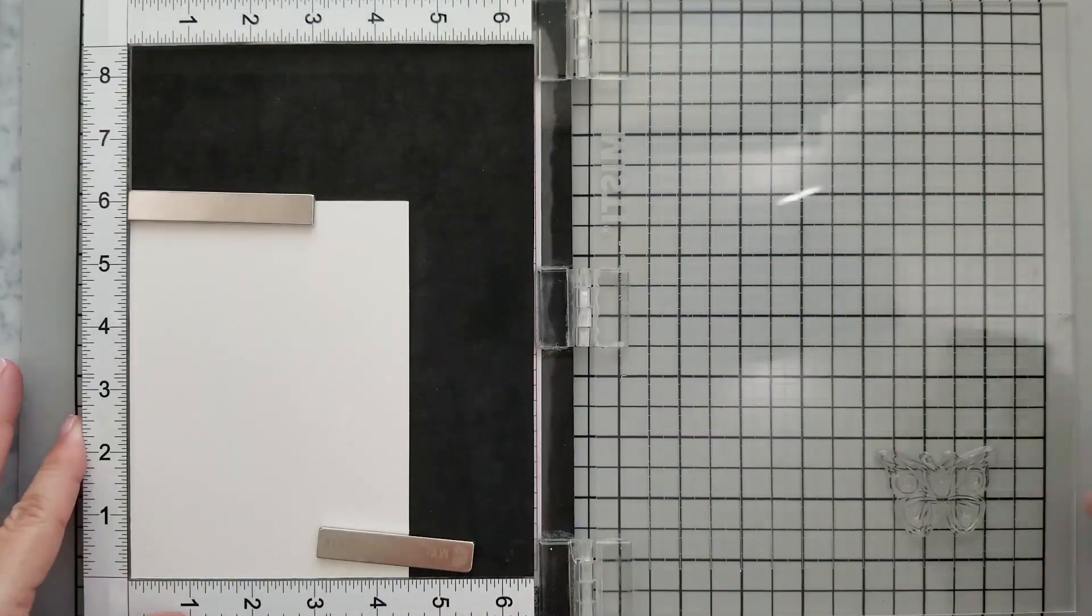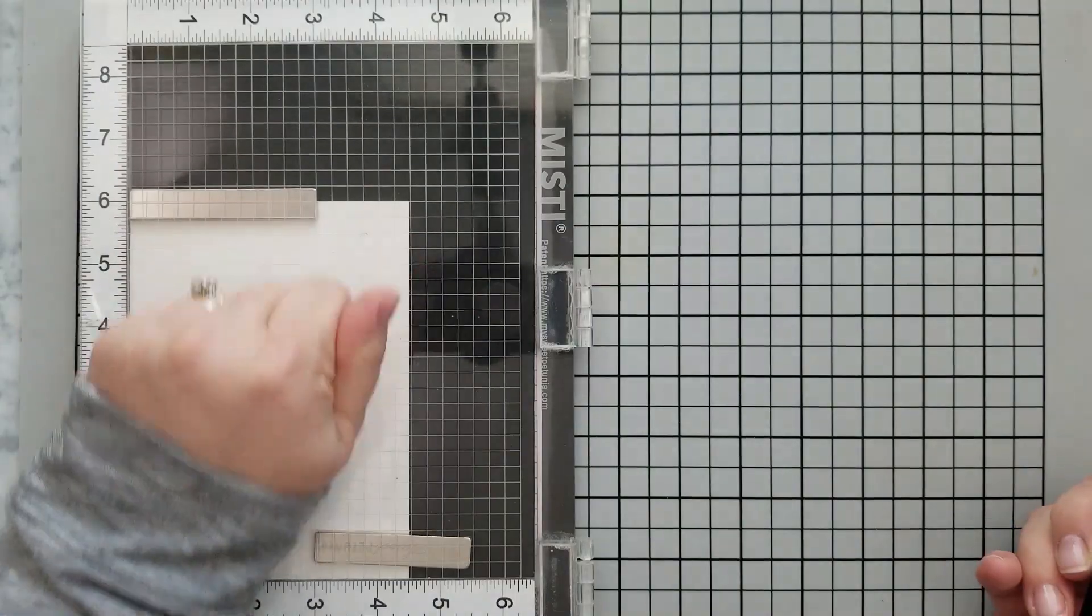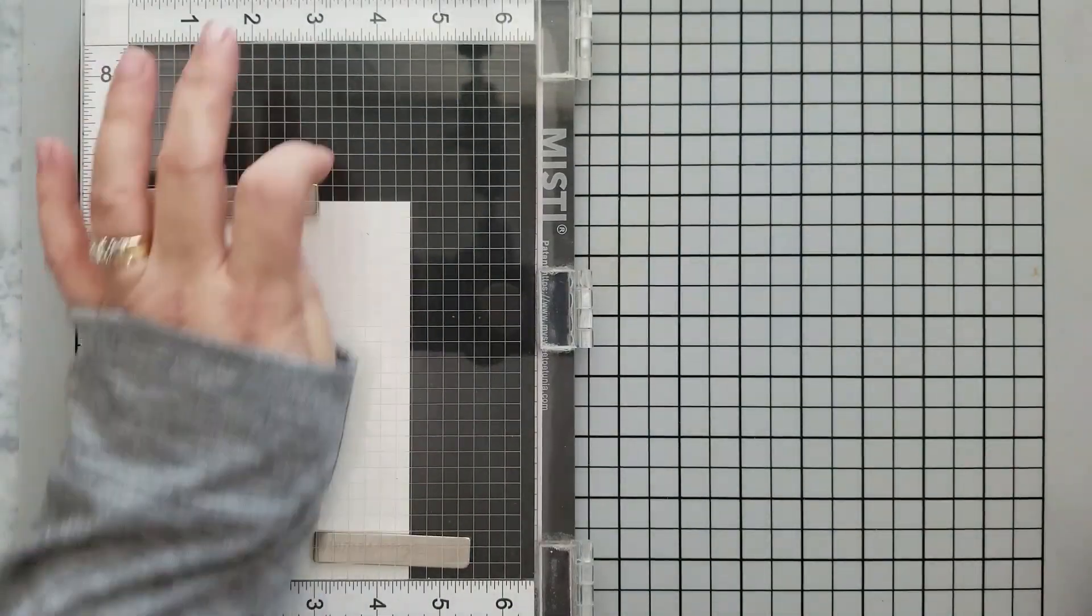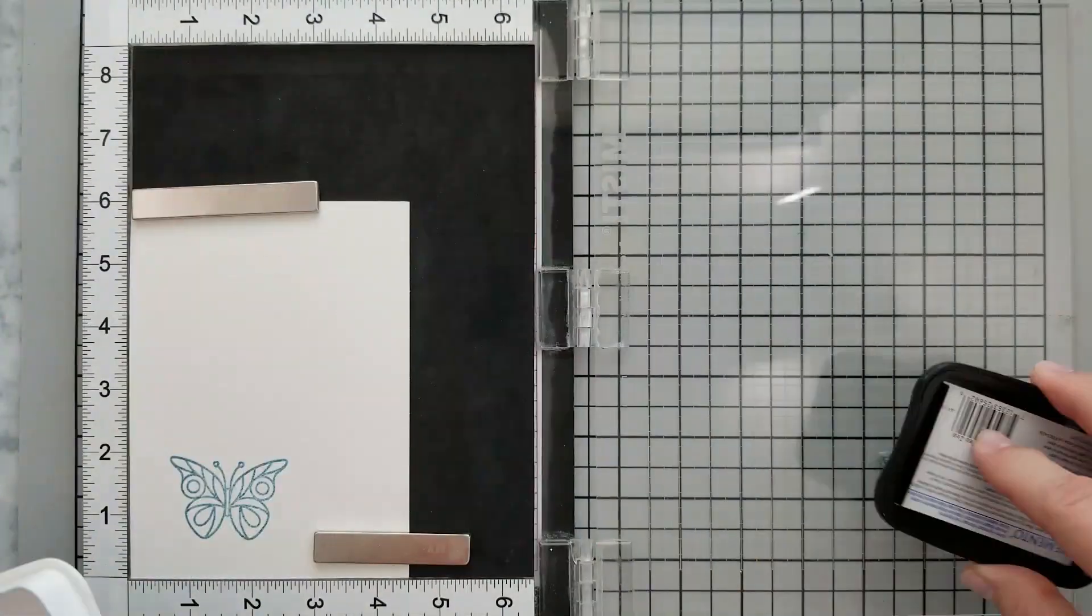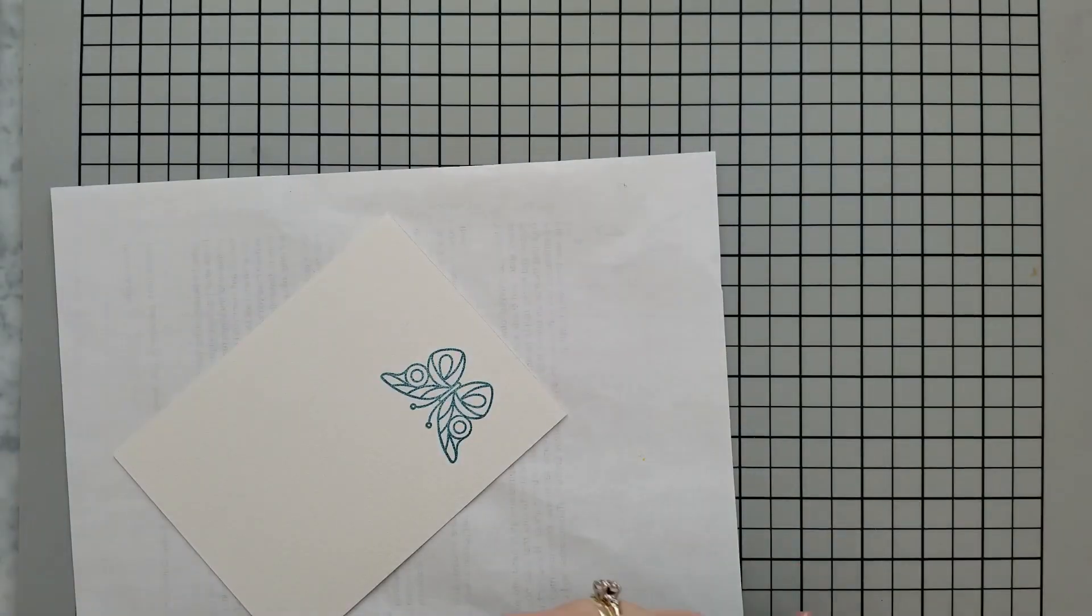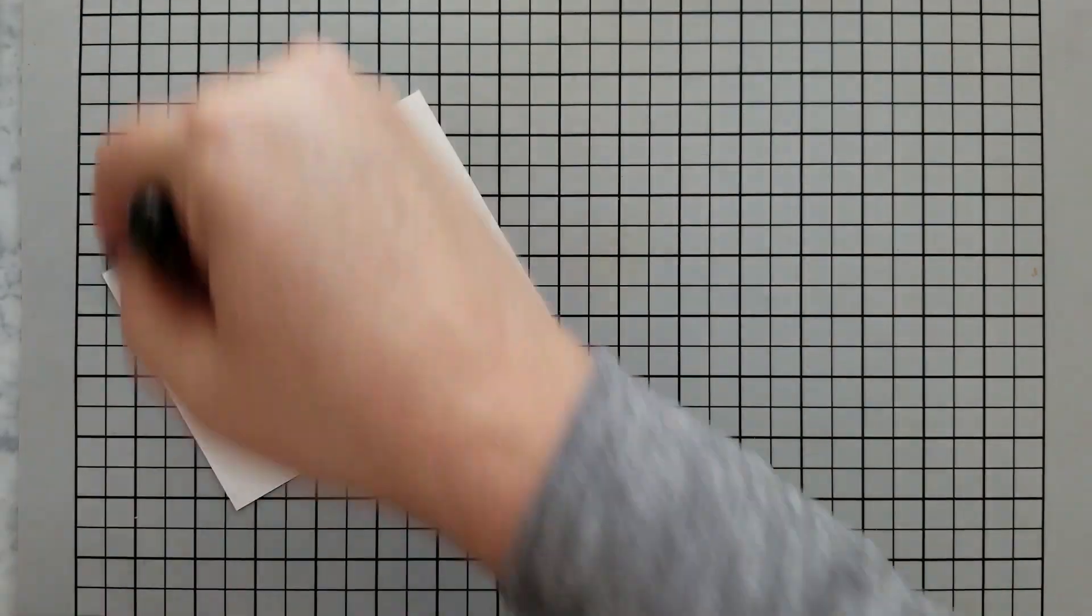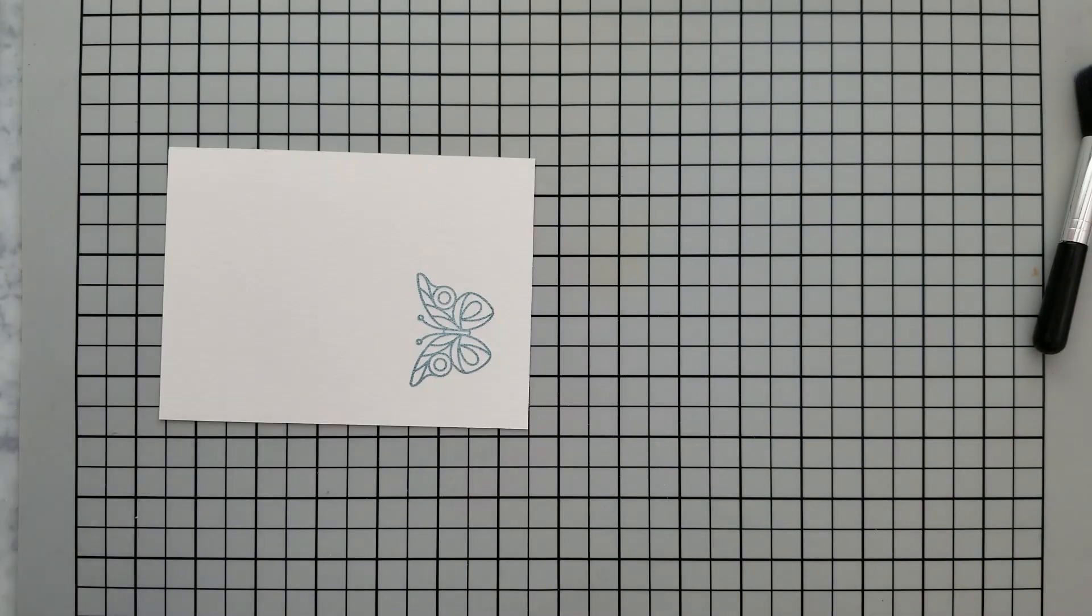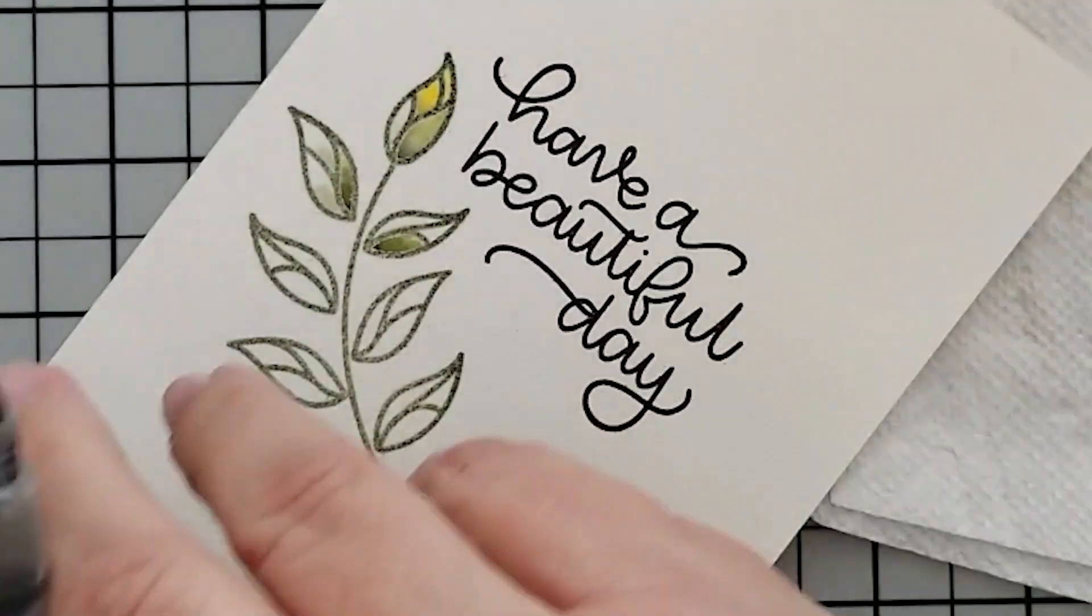Once it's cool, take a rag and wipe off any excess anti-static powder left behind. We're going to repeat all of that again to stamp our butterfly. We're stamping on watercolor paper again, first with the Versamark ink and then we went over with the Zeal Teal ink, covered it with our clear embossing powder, did a little bit of cleanup for any excess powder left behind, and then heat set it.